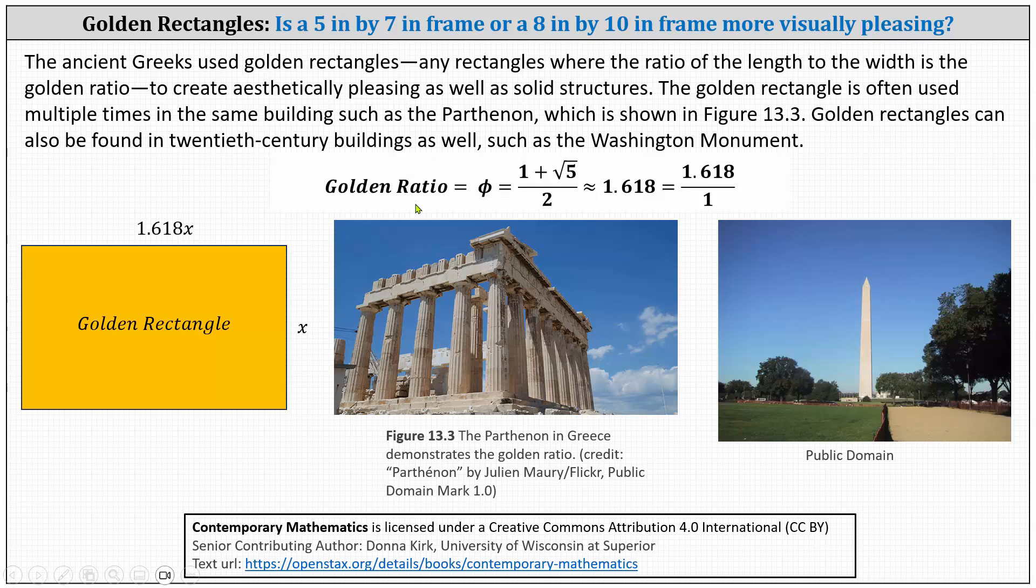Recall the golden ratio is exactly equal to the ratio of the sum of 1 and the square root of 5 to 2, or if we divide approximately 1.618, or as a ratio 1.618 to 1.